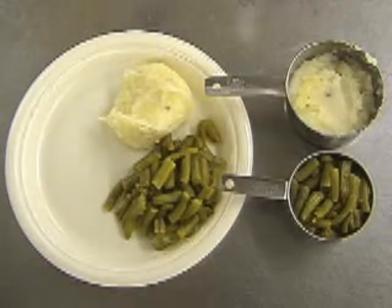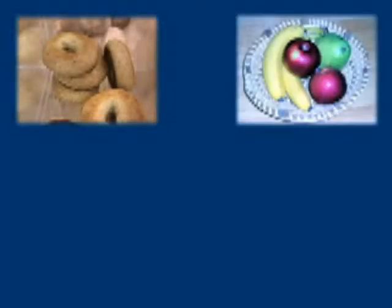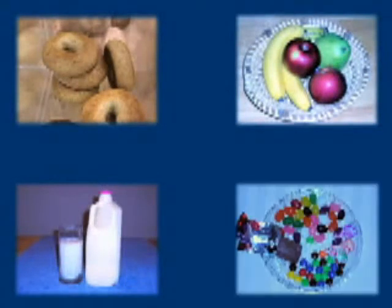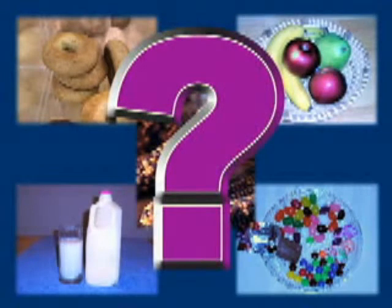Therefore, serving size is going to be an important part in carbohydrate counting. It is a good idea to familiarize yourself with the different amount of carbohydrates in various foods. First, we will begin by learning approximately how many grams of carbohydrate are in different foods. Next, we will look at food labels because they tell you exactly how many grams of carbohydrates are in foods.